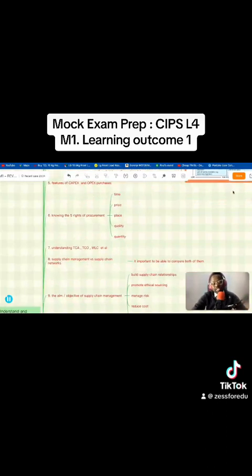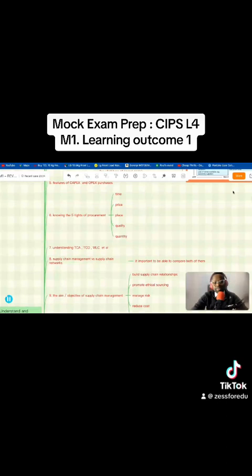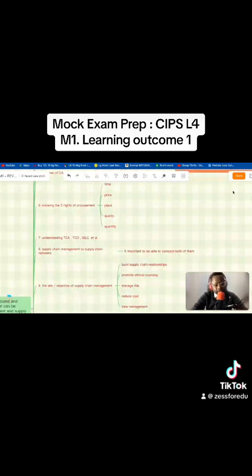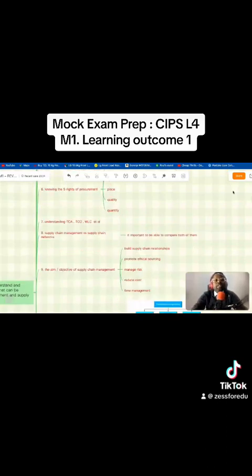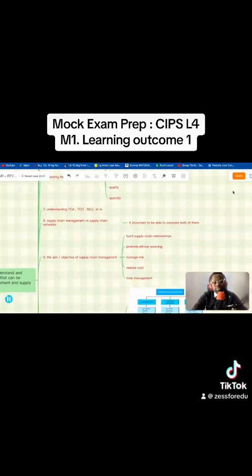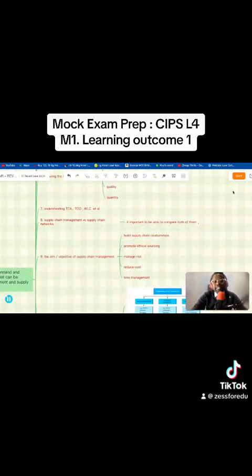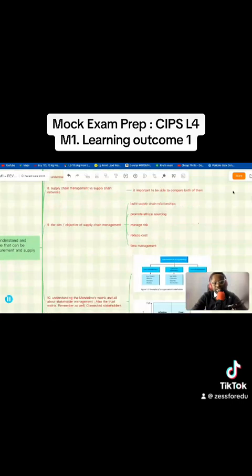Eight: supply chain management versus supply chain networks. Something you may want to look at. Supply chain network is an extension of a supply chain, or as I always say, it's like a supply chain on steroids - it's a very complex supply chain. Have a look at it. You might be asked to compare them. Nine: the aims or the objectives of supply chain management. What are they?